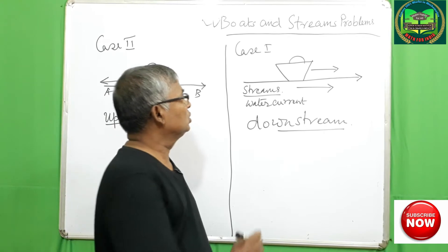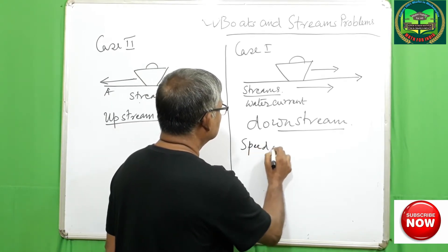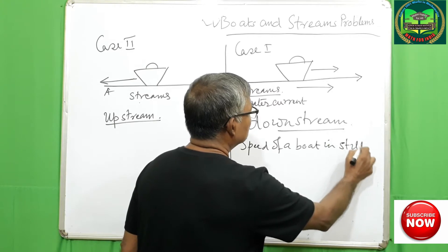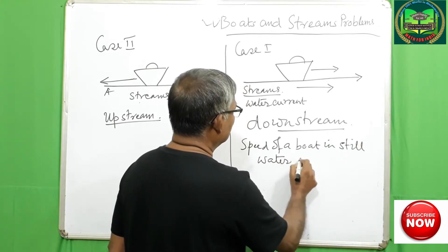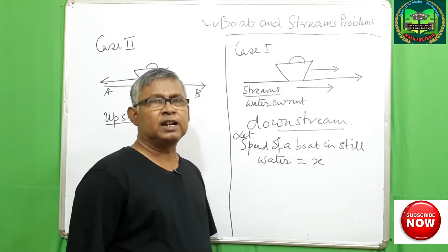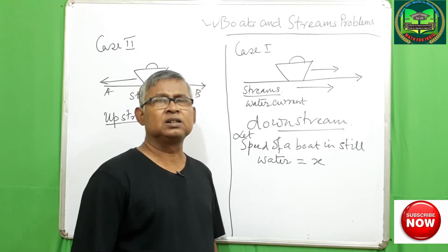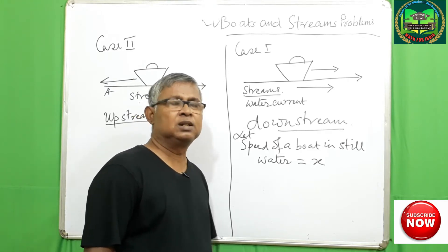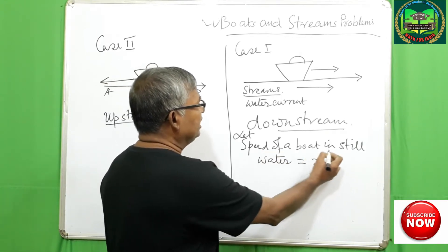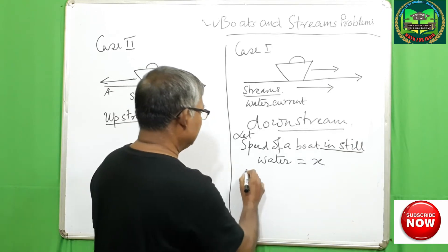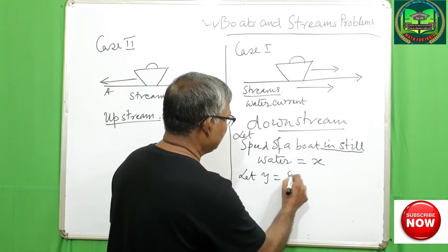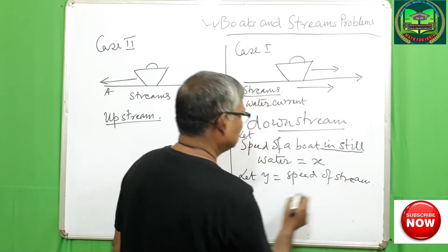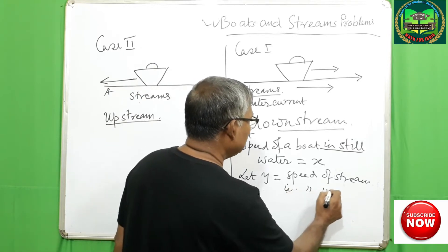Students, let us know the speed of a boat in still water. Let us consider a boat traveling in stagnant water — that is, in a lake or a big pond where the water is still. Let X be the speed of the boat in still water, and let Y equal the speed of the stream, that is, the speed of the water current.